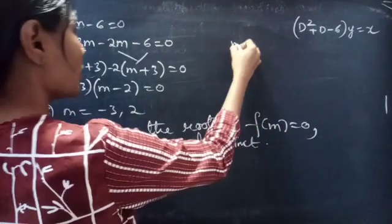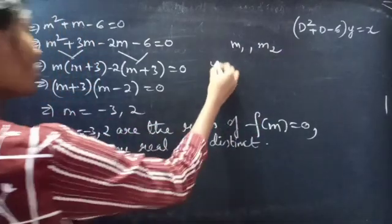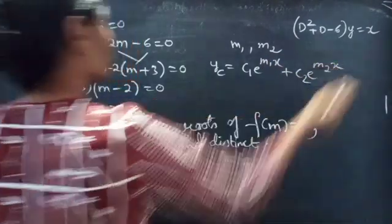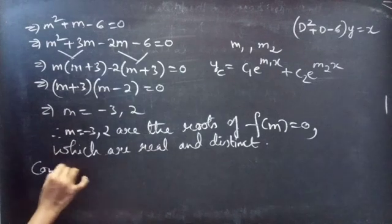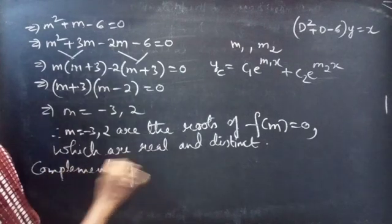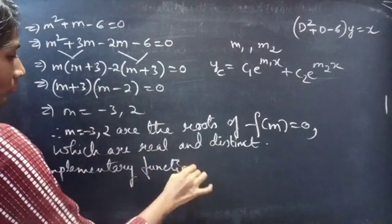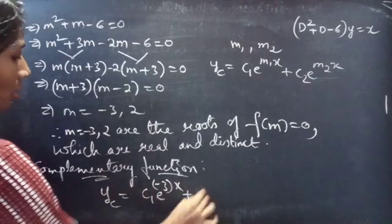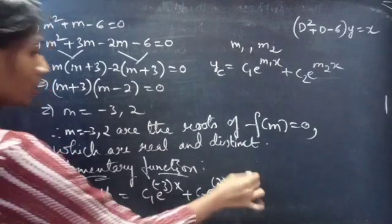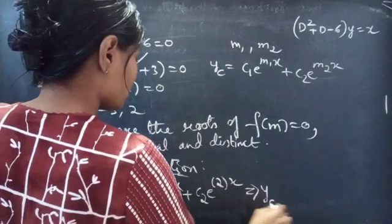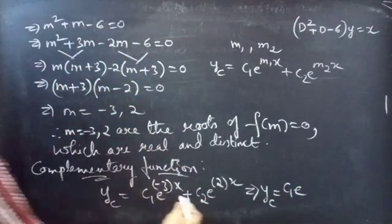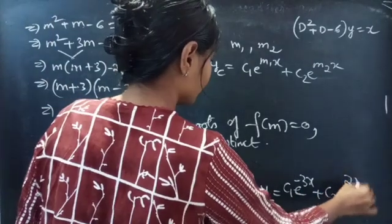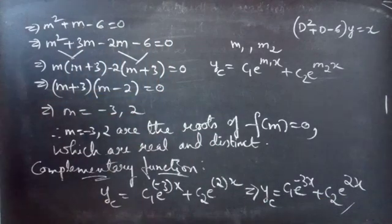We know that when two roots m1 and m2 are real and distinct, then yc = c₁e^(m₁x) + c₂e^(m₂x). Our complementary function is yc = c₁e^(−3x) + c₂e^(2x).